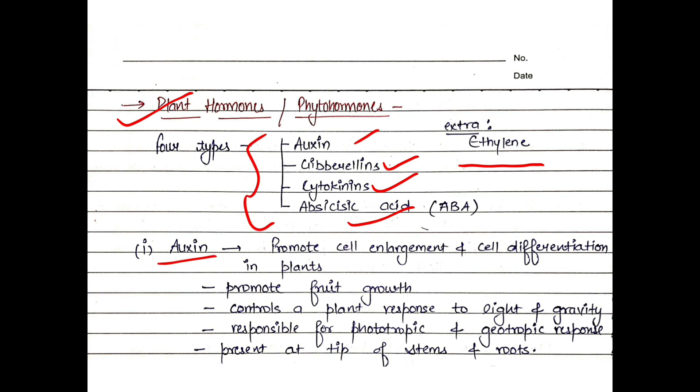First is Auxin. Auxin promotes cell enlargement and cell differentiation. Cell differentiation means a cell has no function initially, but after some days it can provide a function for tissue formation. Auxin promotes fruit growth. Auxin controls the response of the plant to stimuli, specifically light and gravity.